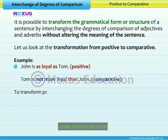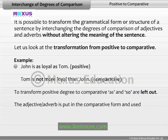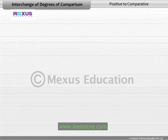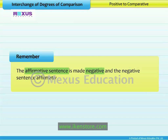To transform positive degree to comparative, 'as' and 'so' are left out. The adjective or adverb is put in the comparative form and used with the conjunction 'than.' Remember, if the sentence is affirmative in the positive degree, it becomes negative in the comparative degree. Similarly, the negative sentence becomes affirmative when transforming positive degree to comparative degree.